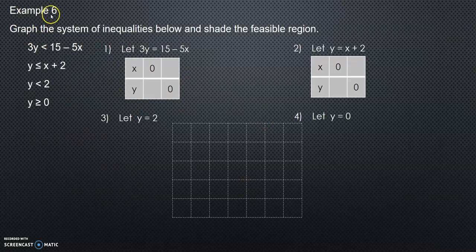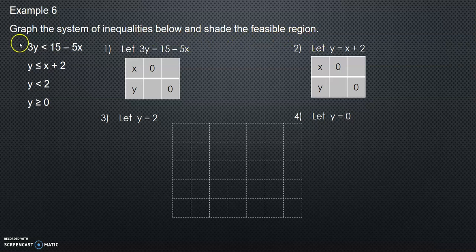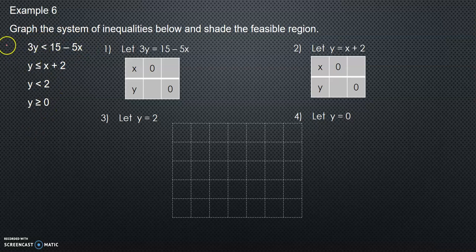Example 6: graph the system of inequalities below and shade the visible region. We have four inequalities. The first inequality is dotted since it is not included. The second inequality is included, so it is a solid line.